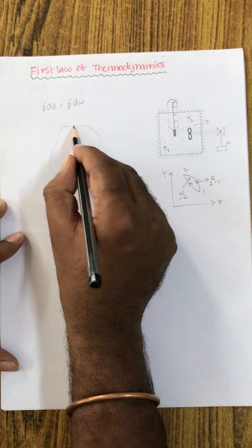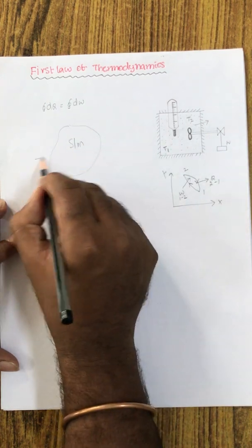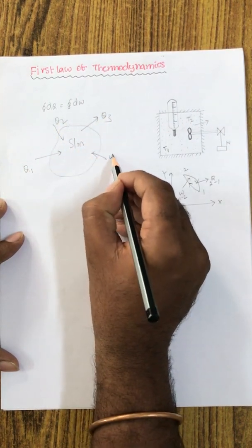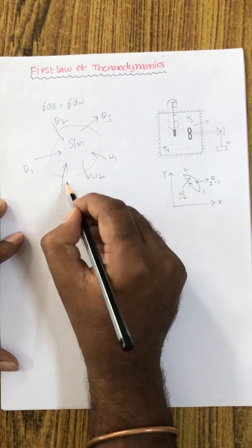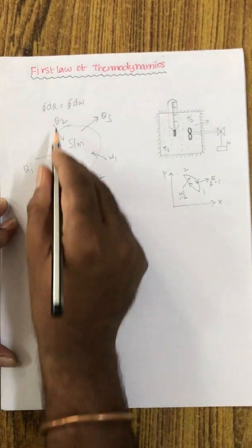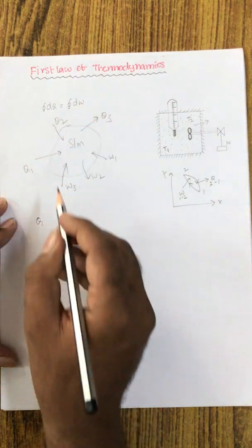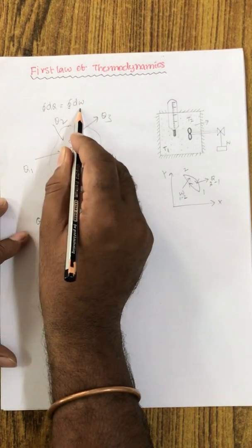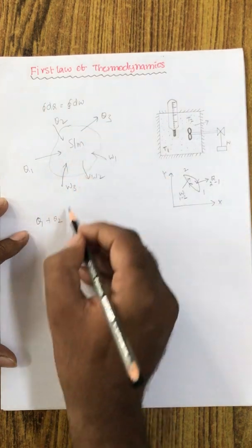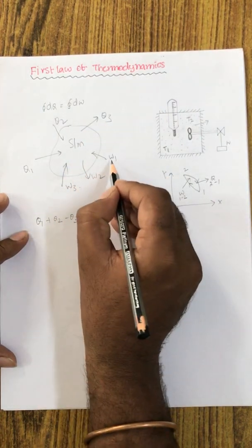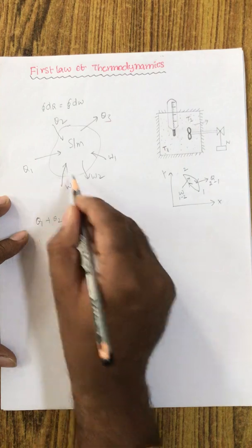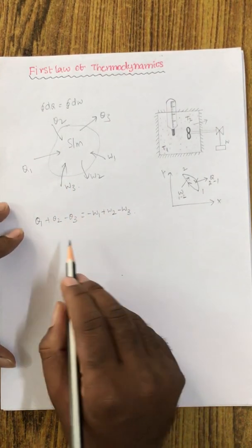For example, consider a closed system interacting with a number of work transfers W1, W2, W3 and a number of heat transfers. Applying the first law of thermodynamics for a closed system: the cyclic integral of delta Q equals the cyclic integral of delta W. Q1 and Q2 are heat supplied to the system (positive), Q3 is heat rejection (negative), W1 is work supplied to the system (negative), and work done by the system is positive. W3 is also work supplied to the system (negative).